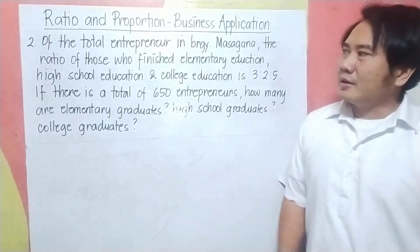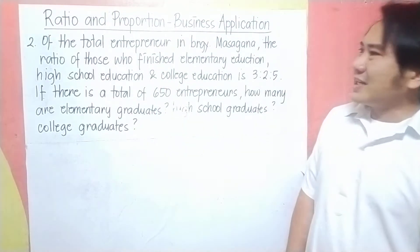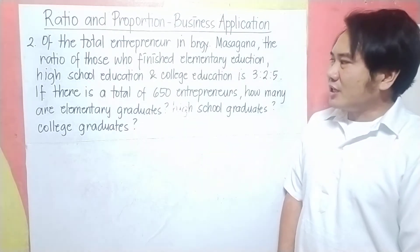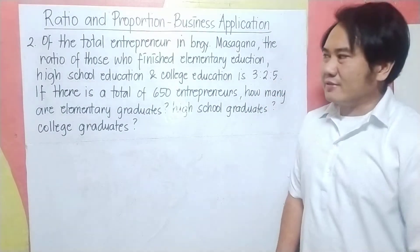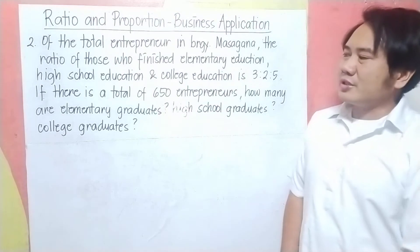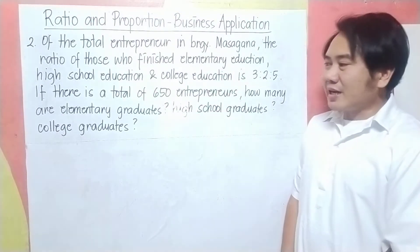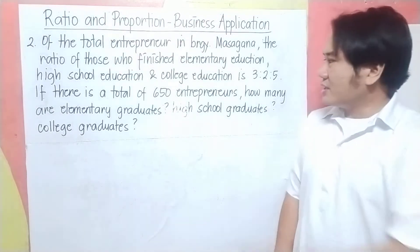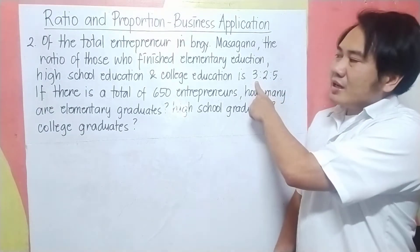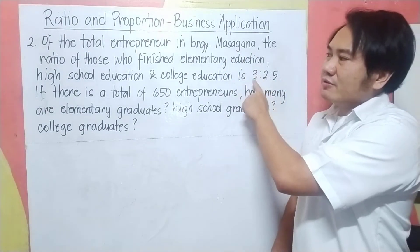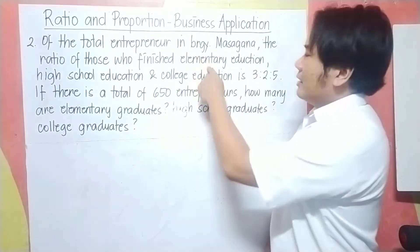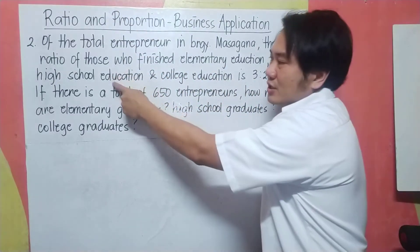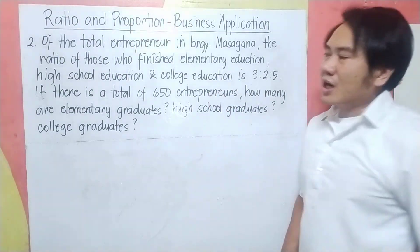Number two: Of the total entrepreneurs in Barangay Masagana, the ratio of those who finished elementary education, high school education, and college education is 3 to 2 to 5. If there is a total of 650 entrepreneurs, how many are elementary graduates, high school graduates, and college graduates? The ratio 3 represents entrepreneurs who finished elementary, 2 represents those who finished high school education.